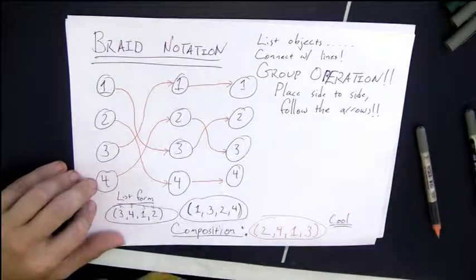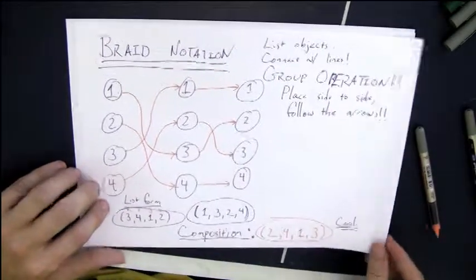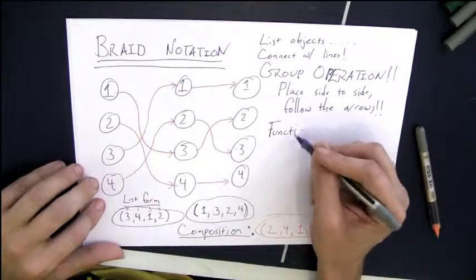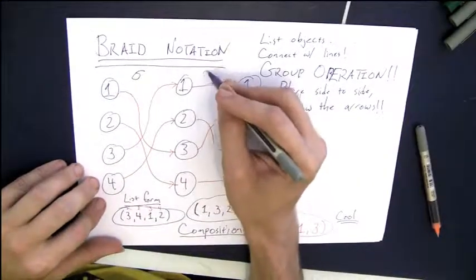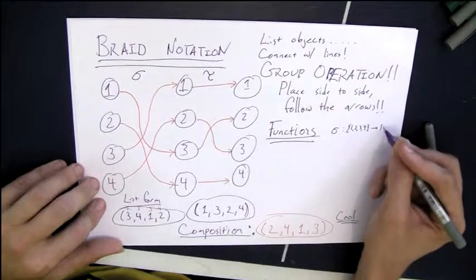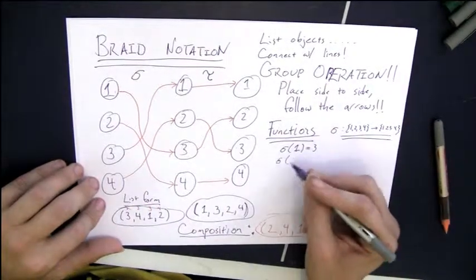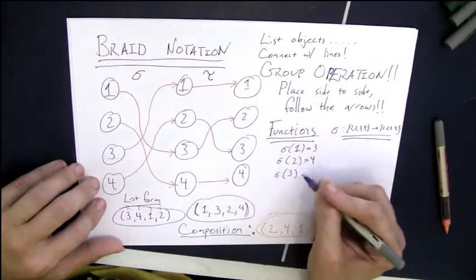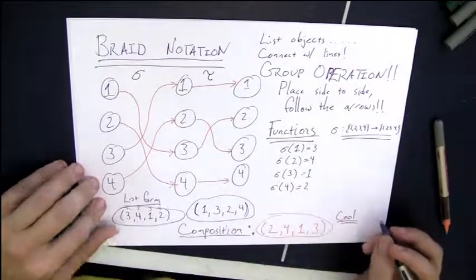It really, really is a composition, because I can also write these as functions. I can think of a permutation as a function from the set one up to n to one up to n, such that it's a bijection. It's one to one and onto. Here, sigma of one is three, sigma of two is four, sigma of three is one, and sigma of four is two.